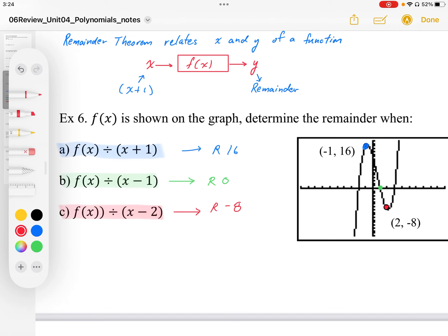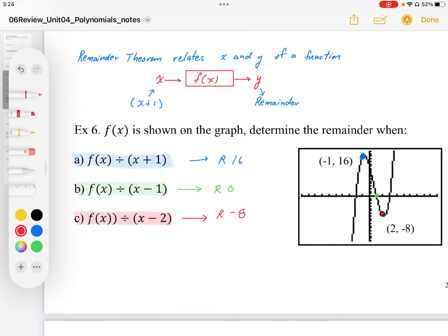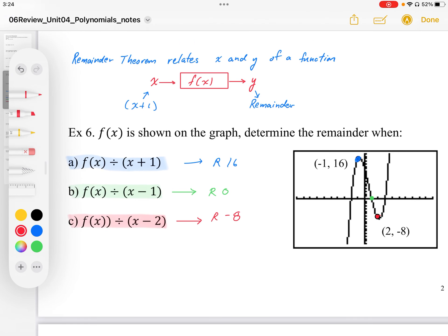So again, the remainder theorem does relate to substituting in x values into the function, which then implies that we have an x and y coordinate as well. So we can get remainders from the graph like this.